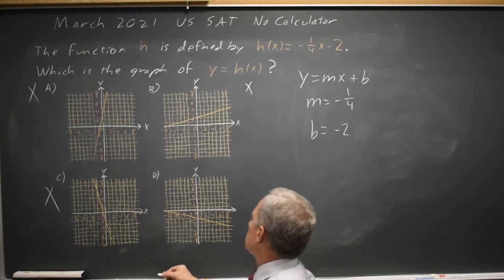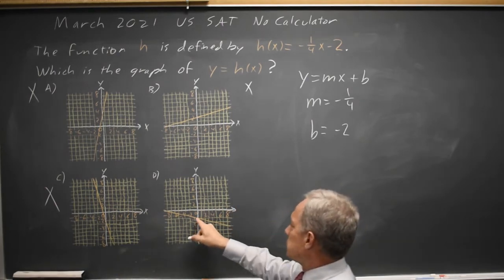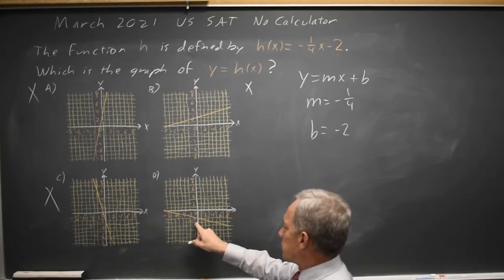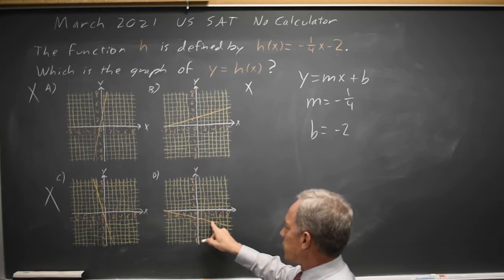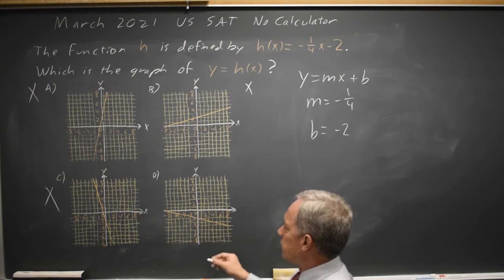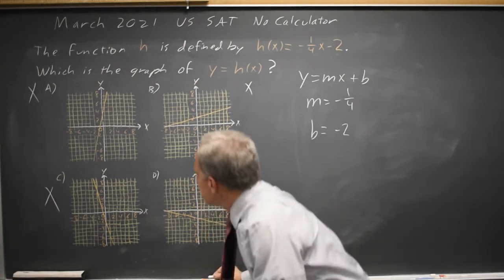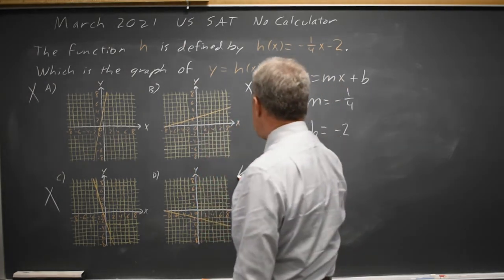Choice D, from zero negative two, we go down one to negative three and we go right four to x equals four. So the slope is down one, right four, negative one over four is negative one-fourth. Choice D is the correct answer.